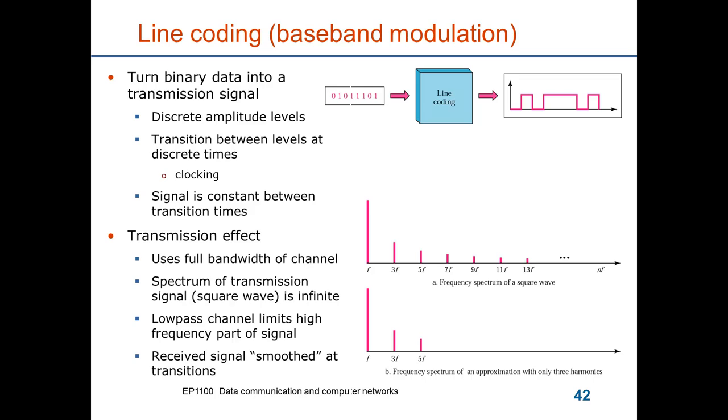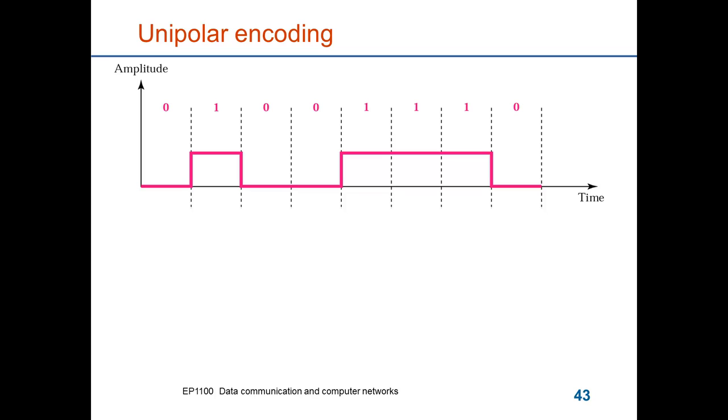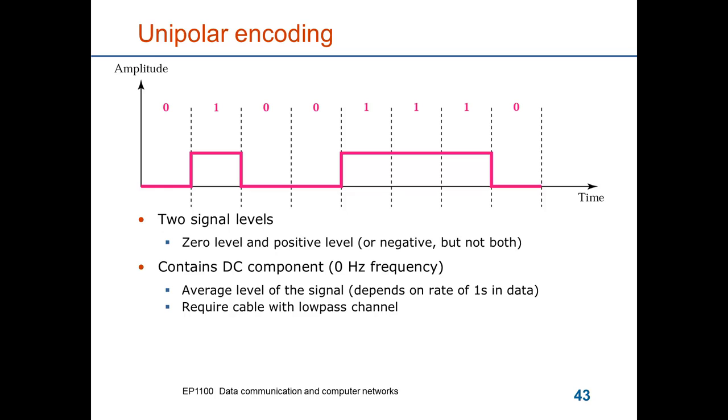Here's an actual case of a line coding. It's called unipolar encoding, and it's an example that was used in the previous picture. This signal contains a direct current component, a zero-frequency component. You can imagine if you only transmit an infinite string of ones, then you will have a fixed voltage, and a current will flow through the cable. The average level of the signal will thus depend on the number of ones that you have in the signal, but it will always be above zero. This type of coding is only possible if you have a cable that permits a direct current to flow through the cable.